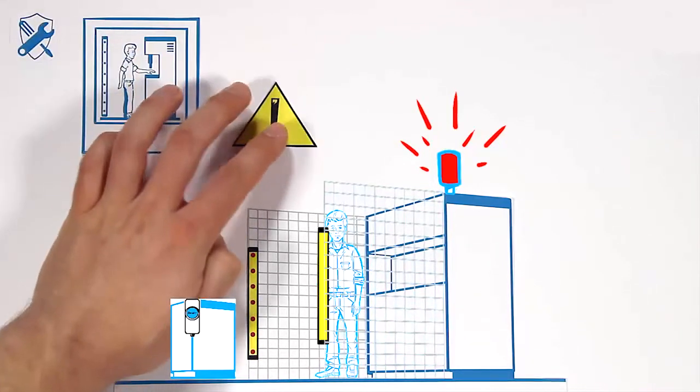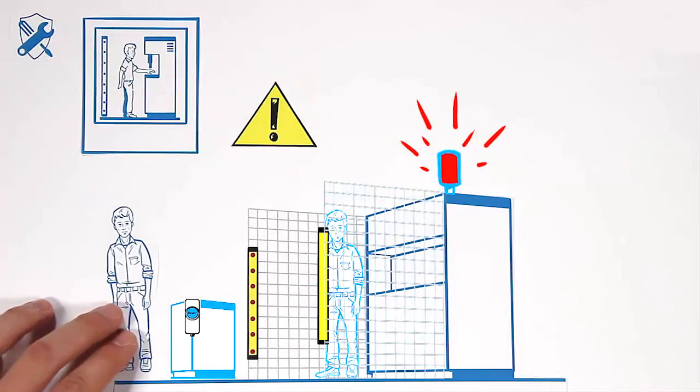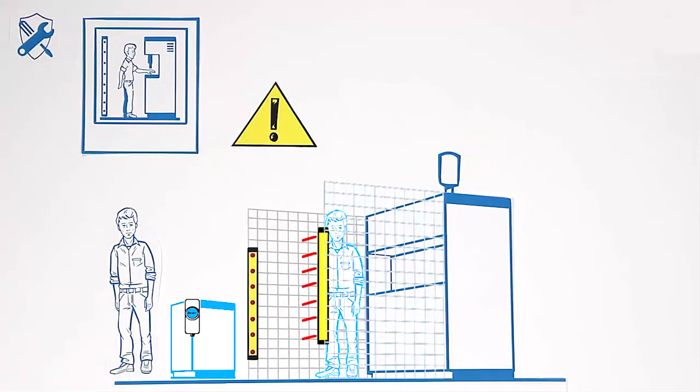Accidents may happen when a second person appears at a spot while the operator is still located in the hazardous area. That's why the reset is only permitted in totally visible areas.